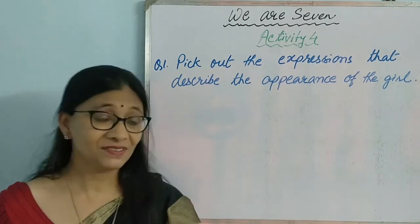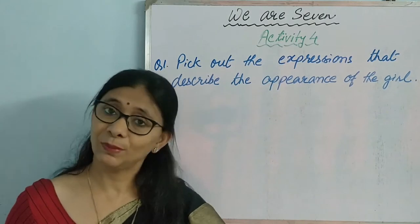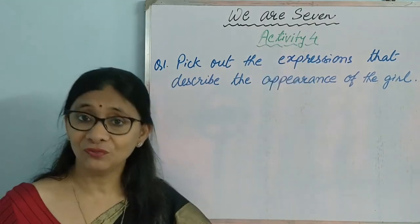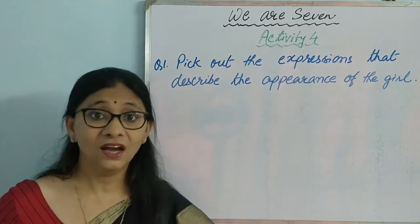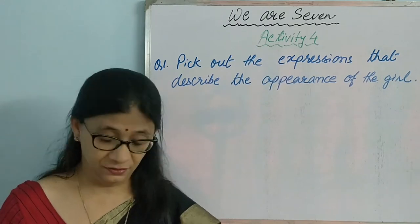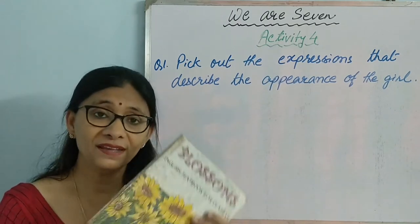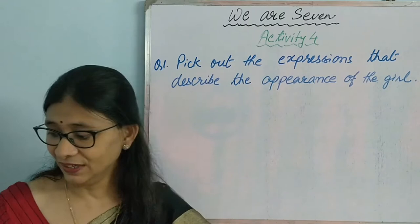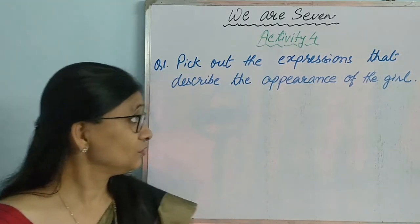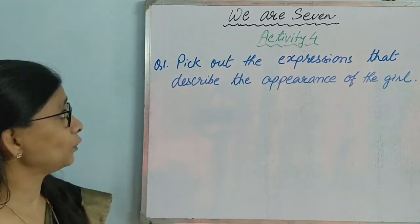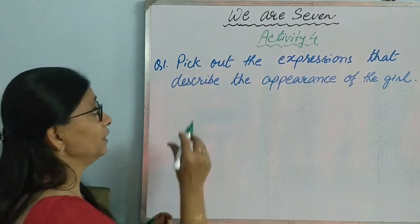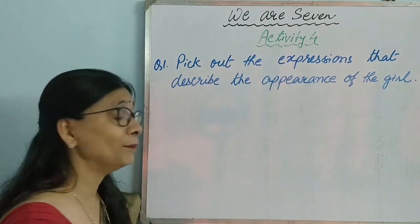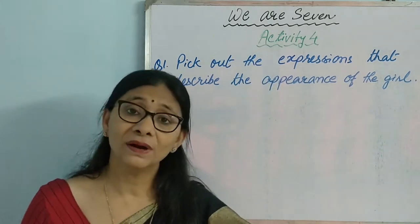Presently I am discussing the poem 'We Are Seven' by William Wordsworth and I shall be talking about Activity 4, which deals with question answer. The book is 'Blossoms' of Class VII. So let's see the question first: Pick out the expressions that describe the appearance of the girl.